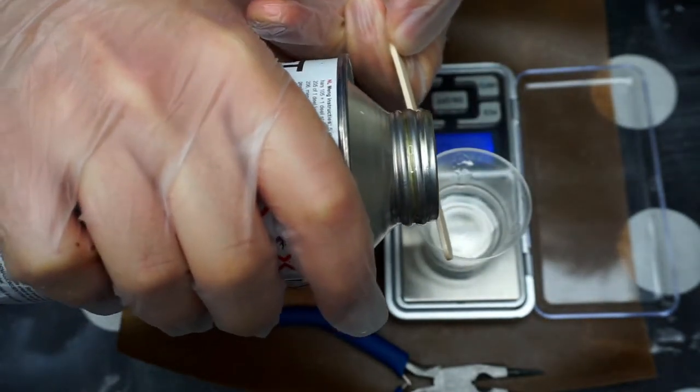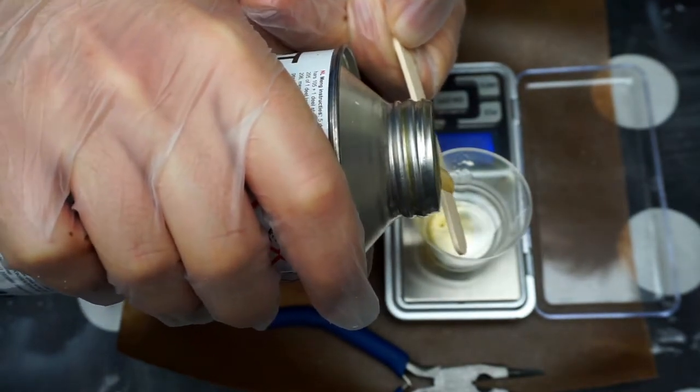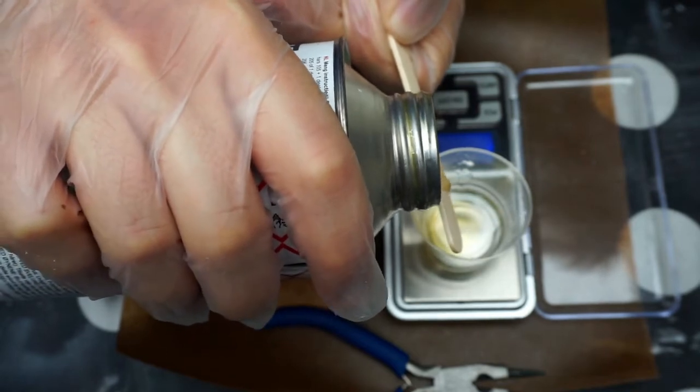As you can see the hardener is pretty yellow in color, so I'm gonna have to use some dye later.